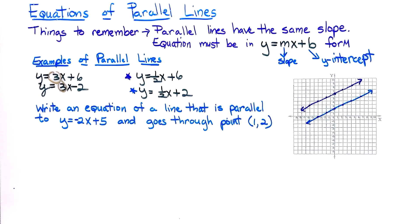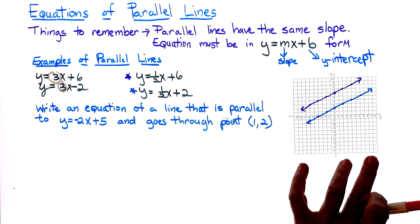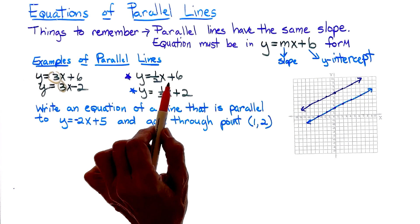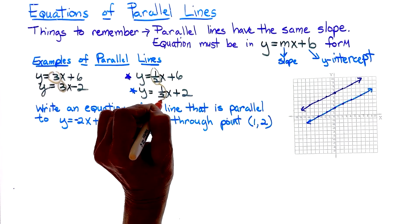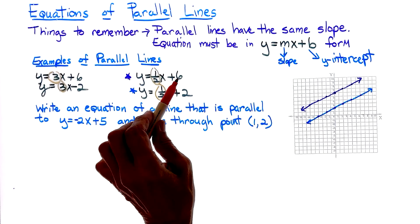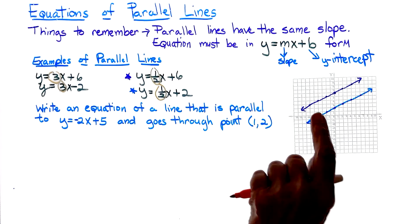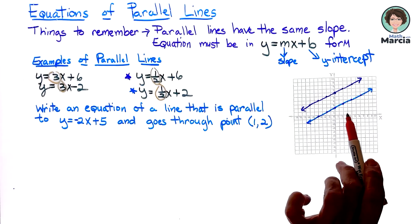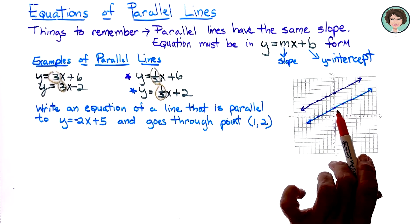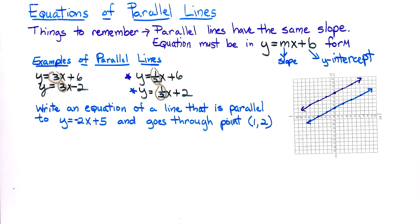Looking at a second example graphed: y equals one-half x plus 6 and y equals one-half x plus 2. They are parallel because they have the same slope, but the y-intercepts are different. The purple line crosses the y-axis at 6 and the blue line's y-intercept is at 2. Parallel lines will never meet.